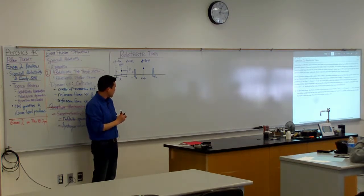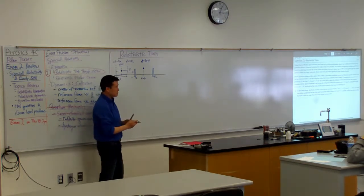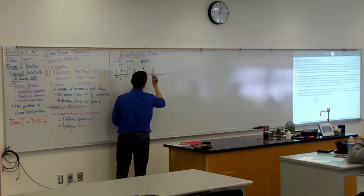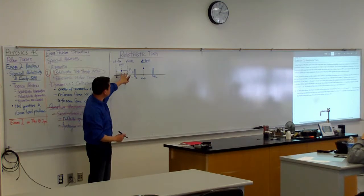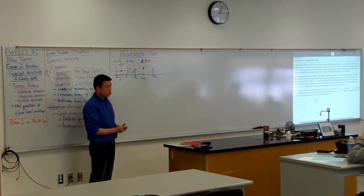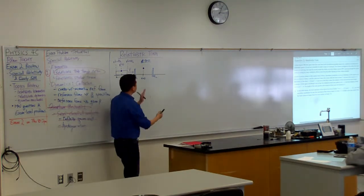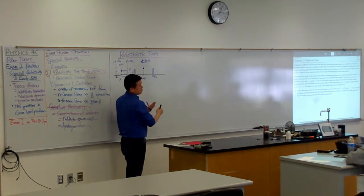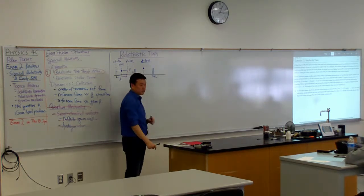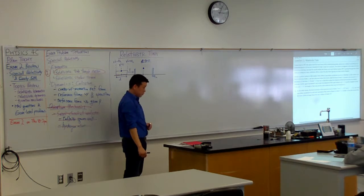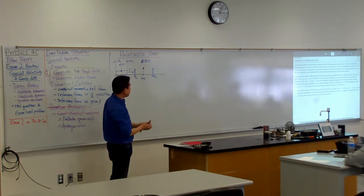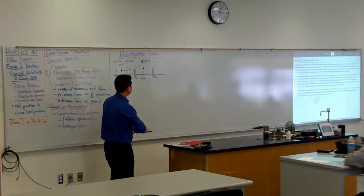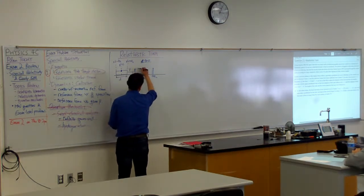So this is a quick intuition check. At time equals zero, from the perspective of the station, how should the train appear? Should it be shorter than the train station, or extending out beyond it? Shorter, right? You expect this to be Lorentz-contracted, and that is the correct answer. So at time t equals zero, this is what you should see.